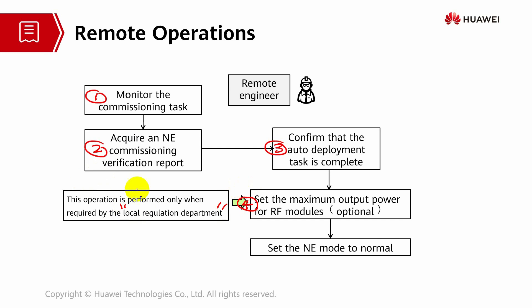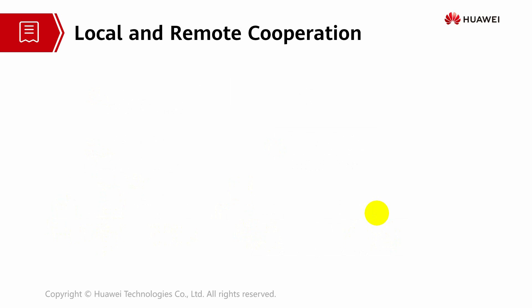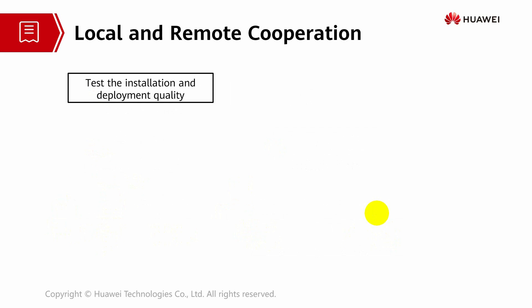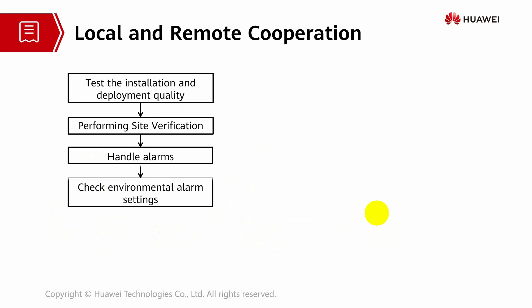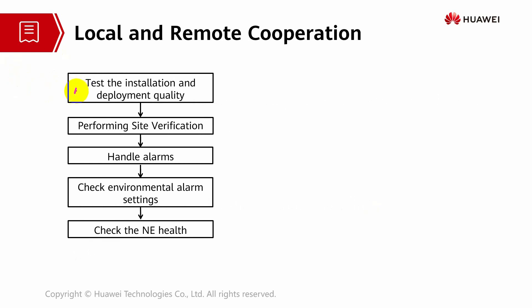After everything is done, the remote engineer will set back the NE to normal after the commissioning process is completed. For local and remote cooperation, they test installation and deployment quality, perform site verification, handle alarms, check environmental alarm settings, and check NE health. All activities and tasks are shared between local and remote teams. They can do it on site using an LMT, or they can use the MAE access.